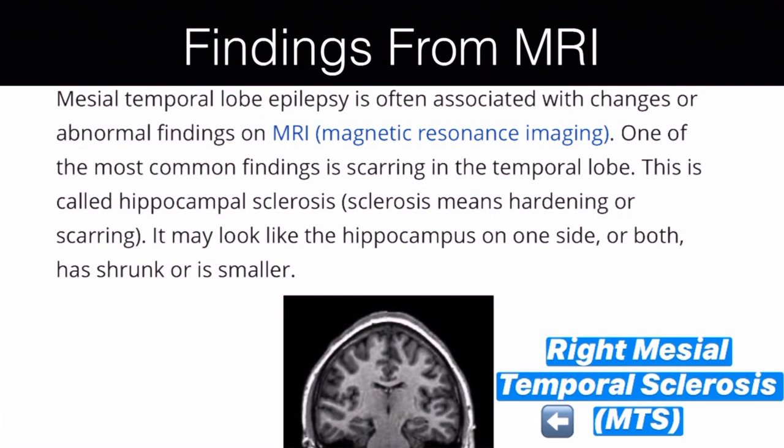One of the most beneficial neurodiagnostic tests for someone who has temporal lobe epilepsy is functional magnetic resonance imaging, or MRI. One of the most common findings on the MRI is scarring in the temporal lobe, called hippocampal sclerosis — sclerosis meaning hardening or scarring. It may look like the hippocampus on one side or both has shrunk or is smaller. Here's a picture of right mesial temporal sclerosis, or MTS.